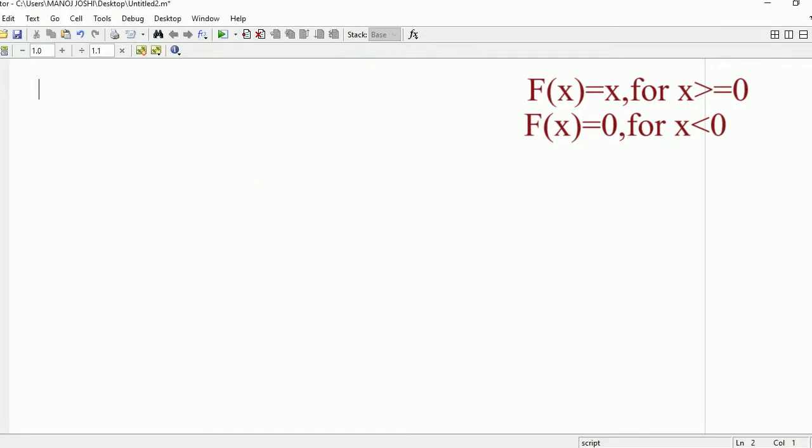Hello everyone, in this video I'm going to show you how to draw a ramp signal in MATLAB using a for loop. First of all, you need to add certain commands: clc, clear all, close all. These are the commands to clear the command window.